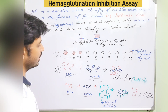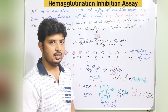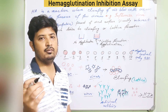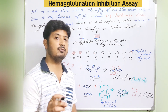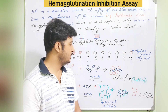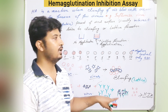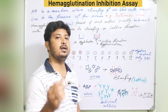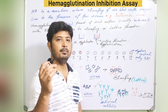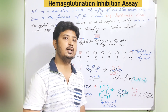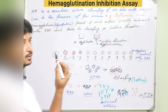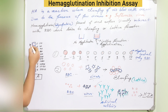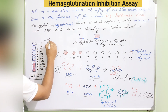For a qualitative test — just determining whether a virus is capable of hemagglutination — you can use the basic hemagglutination reaction. But if you want quantitation, meaning the viral antibody titer in the patient's serum, you need the hemagglutination inhibition assay. The serum is serially diluted across wells, antigen and RBCs are added, and the antibody titer is identified.